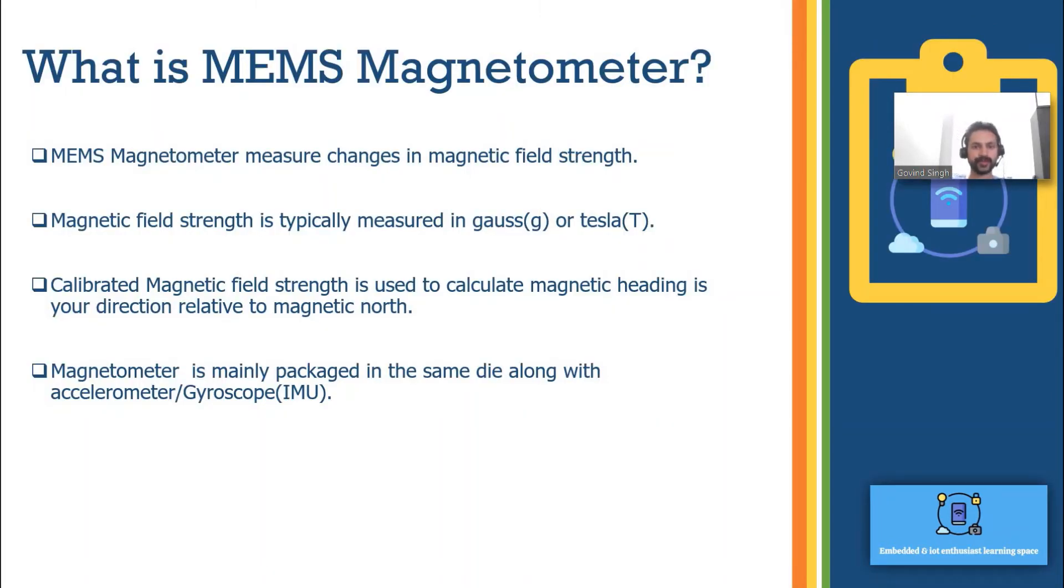What is MEMS magnetometer? MEMS magnetometer is a small-scale microelectromechanical system device for detecting the magnetic field. MEMS magnetometer is used to measure the magnetic field experienced by the device particularly with respect to its orientation. What it measures, it measures the magnetic field strength, and magnetic field strength is typically measured in Gauss or Tesla or Micro Tesla.